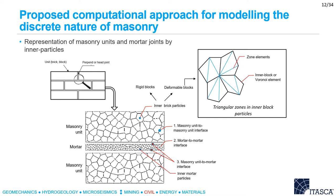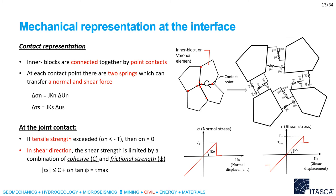In this way, cracking can be allowed in either the brick, mortar, or brick-mortar interface. Inner blocks can be subdivided into simple triangular finite elements, designated as zones, which give a much better approximation of the strain field than the assumption of uniform strain in the whole block. The discrete deformable inner block elements containing internal meshing are assumed elastic, though non-linear material behavior may also be used if necessary. In the numerical model, inner blocks are connected together by point contacts. At each contact, there are two springs which can transfer a normal and shear force.